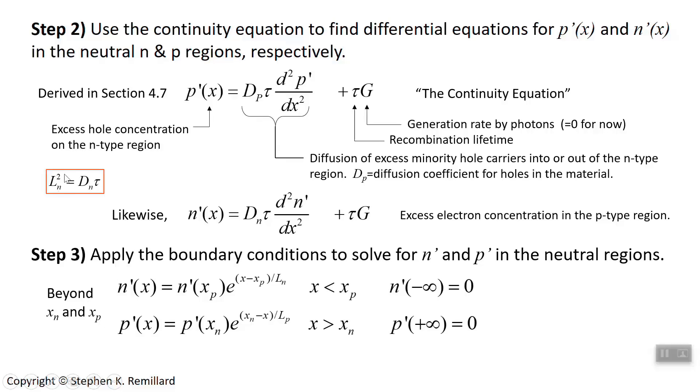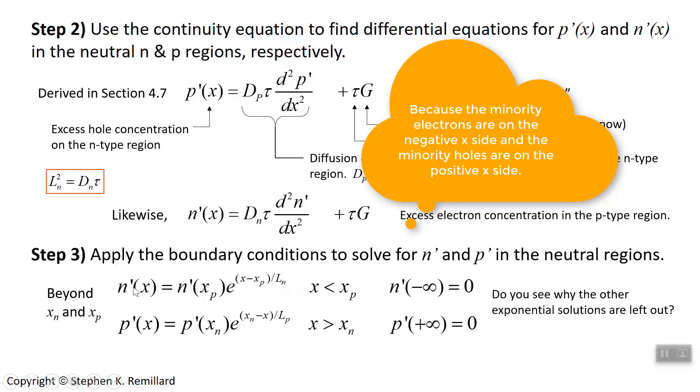N prime and p prime are exponentials, and I kept different terms, the positive term for the n, because it's on the left side in negative x territory. And I kept the minus x term for p, because it's on the right side in positive x territory. I don't want these exponentials blowing up at large x.